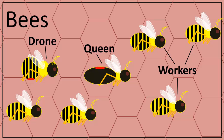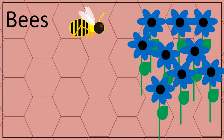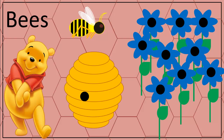A beehive contains a number of different individuals with a variety of roles. The queen, her drones, and her workers all have physically different bodies and perform different tasks. Normally, we see only the worker bees. Workers are responsible for most of the duties in a beehive. They collect food, they construct the hive, and they protect the hive from threats, such as silly old bears.